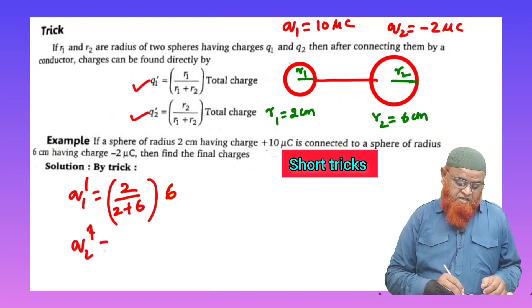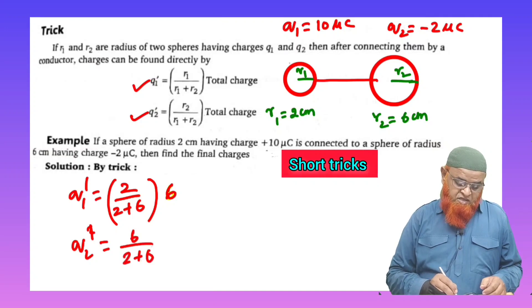And similarly q2 dash is equal to r2. r2 is how much? 6. 6 by 2 plus 6 into total charge here.